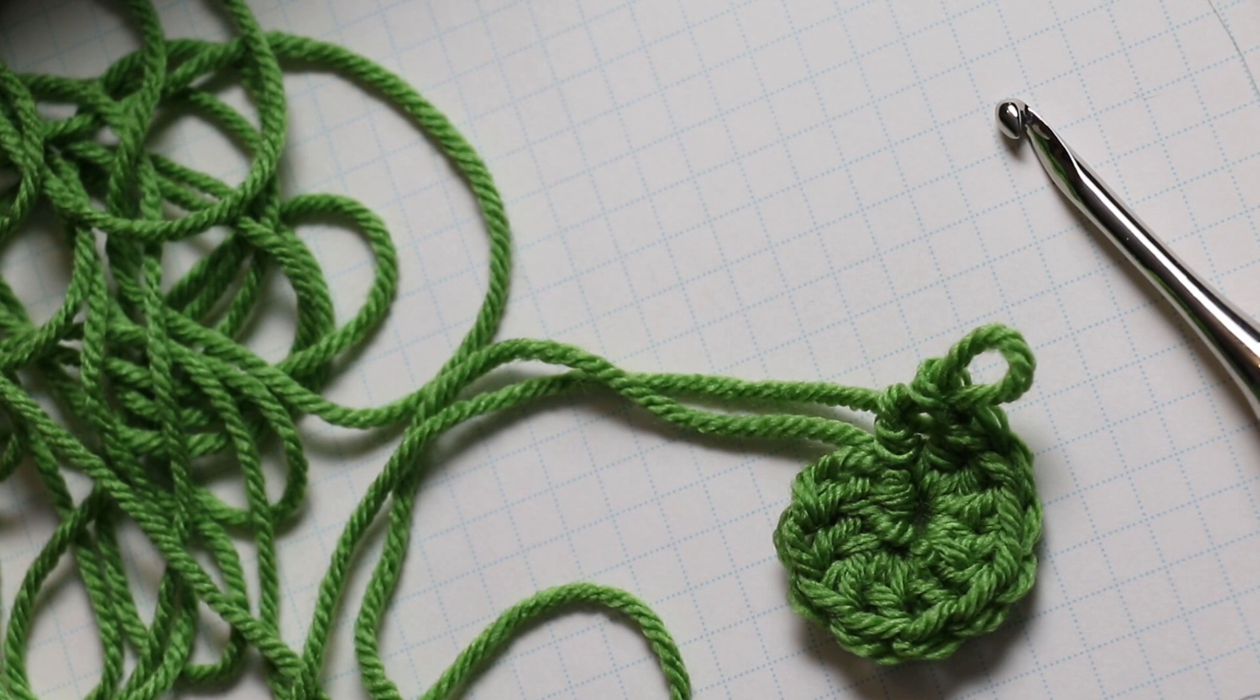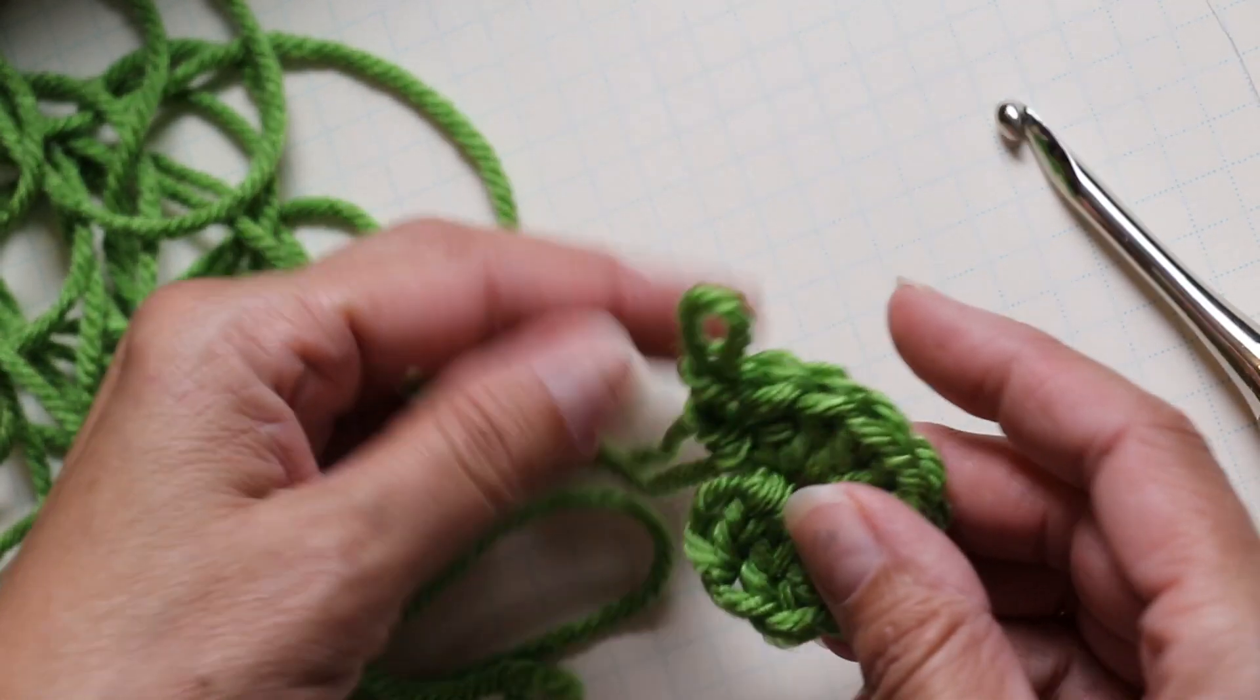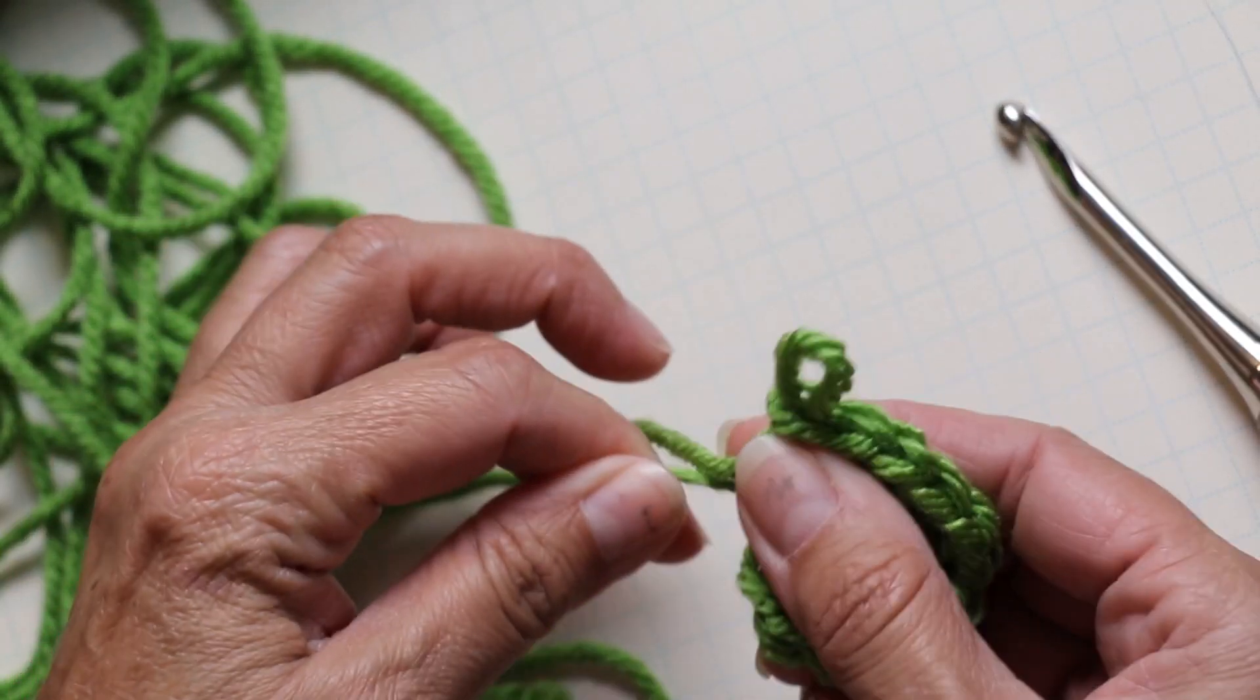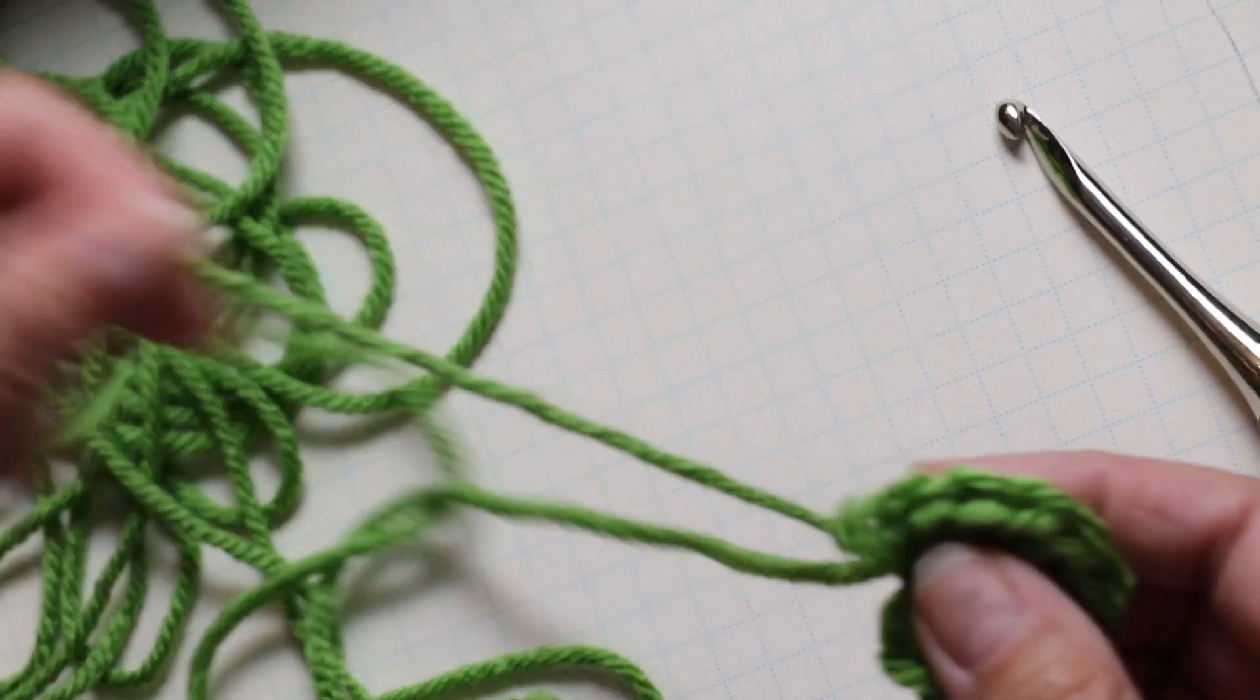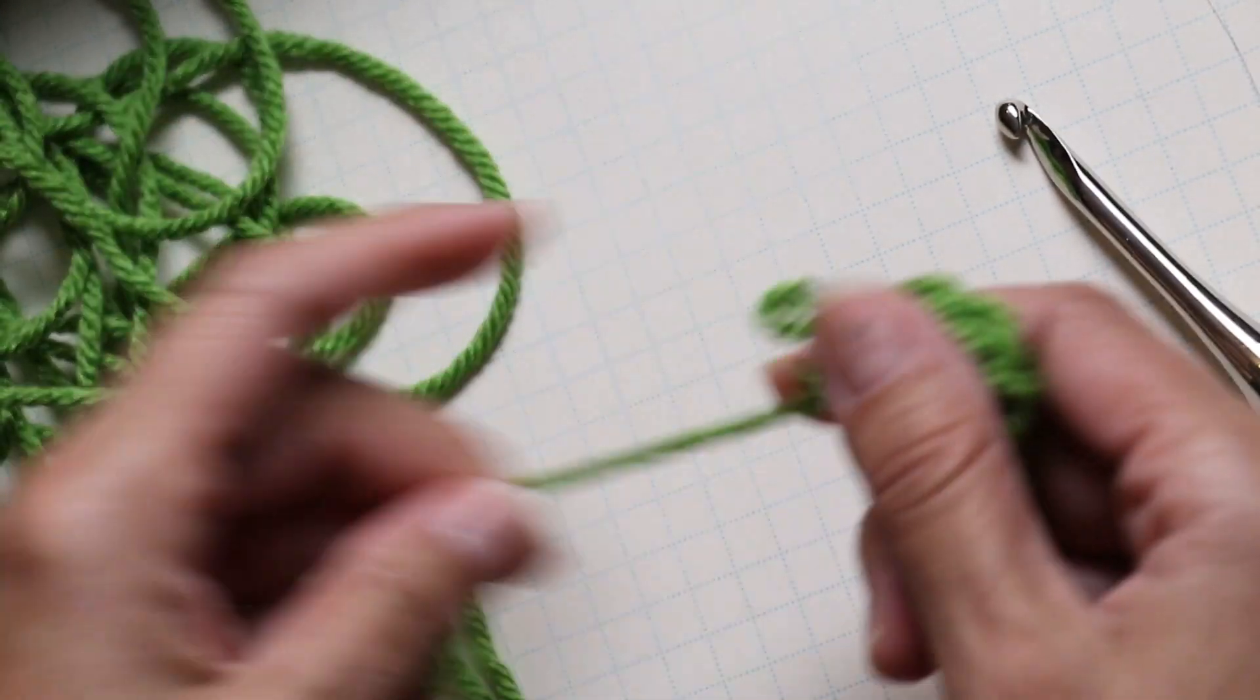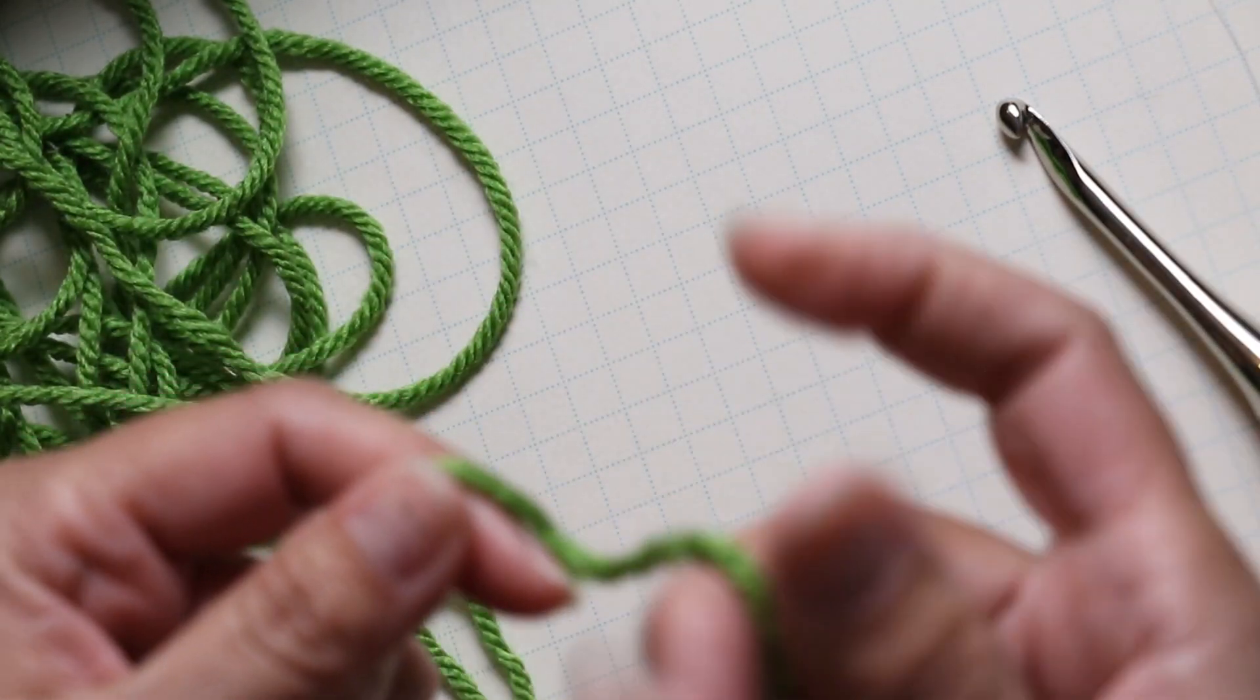Today I'm going to show you how to do a magic circle. A magic circle allows you to tighten up the middle so the hole is really tight. This is really easy to create, especially for beginners.